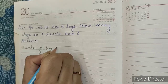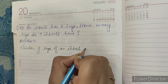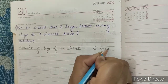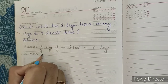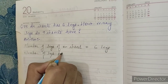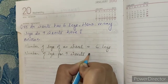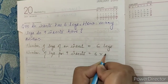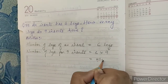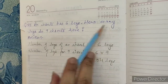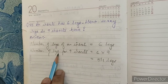legs of an insect equals six legs. Number of legs for nine insects: six into nine — six nines are fifty-four. So fifty-four legs. How many legs do nine insects have? Our answer is: number of legs for nine insects is fifty-four legs.